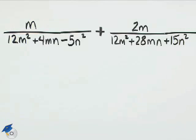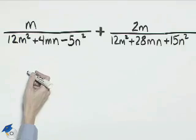To add any fractions, we need a least common denominator, and we'll find that by factoring these two denominators.